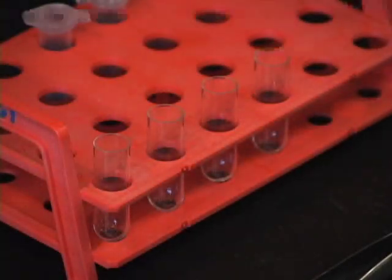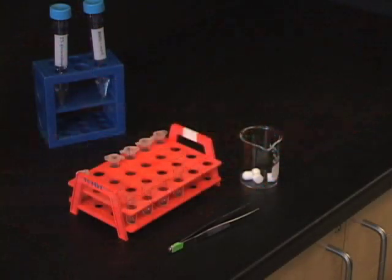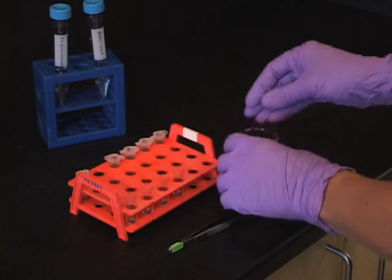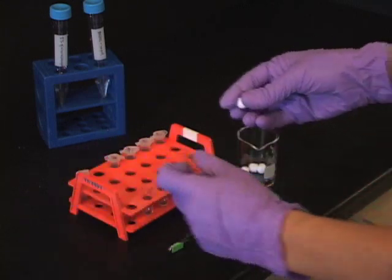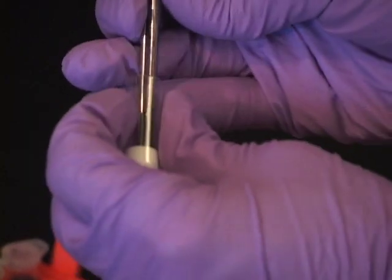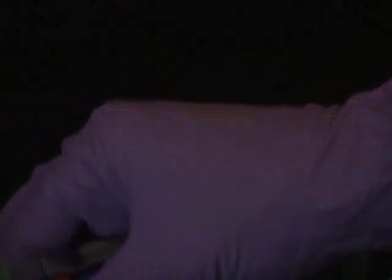Place nitric acid cleaned inserts into Beckman thin-walled ultracentrifuge tubes. Our inserts are custom-made by Ellard Instrumentation. Push down the inserts to the bottom of the tubes with forceps.